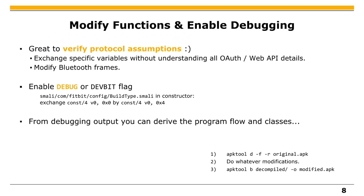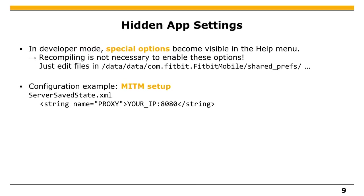We found that if you have debug or developer options enabled, some more options appear in the app menu. Some of them were pretty useful when dissecting the protocol — for example, you can enable a proxy server, which we used for man-in-the-middle, so you only see Fitbit app traffic and not all other traffic on your smartphone. And we found you don't even need to recompile the app, because there are configuration settings in the files, so you can run an unmodified app and just change those settings.